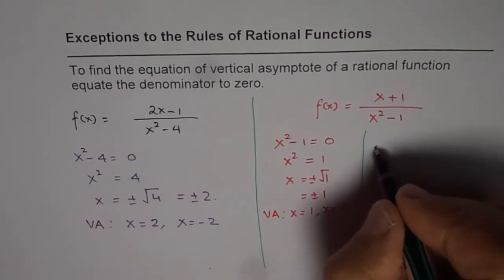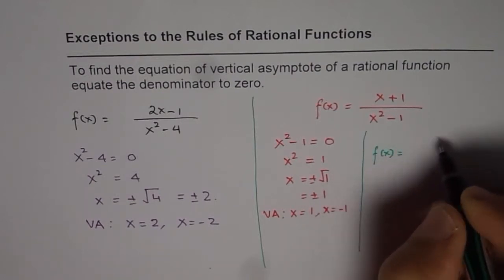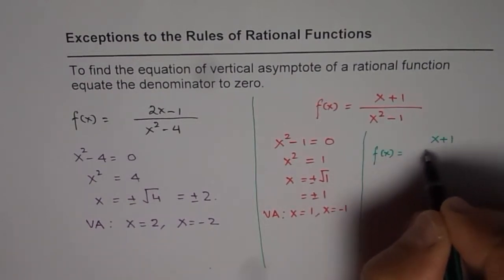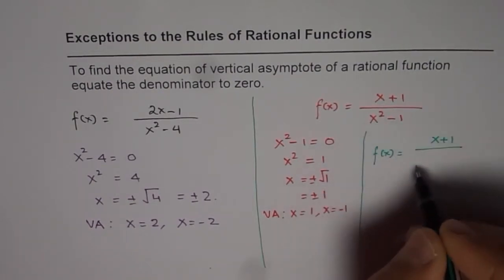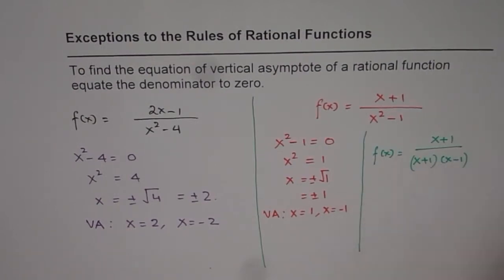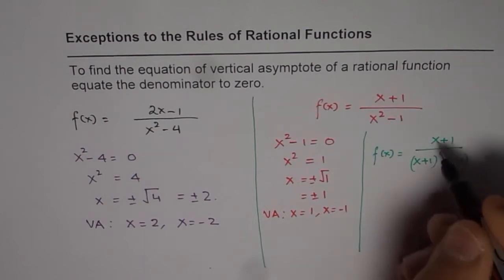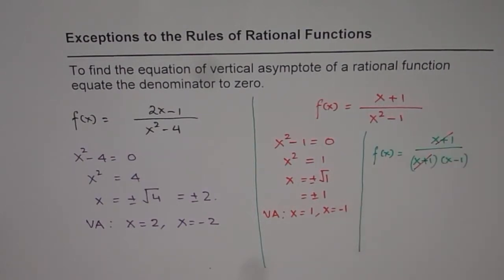Why? The reason is, you could actually solve this equation as follows. Denominator is x plus 1 times x minus 1. Now, here x plus 1 and x plus 1 are common factors which cancel out.